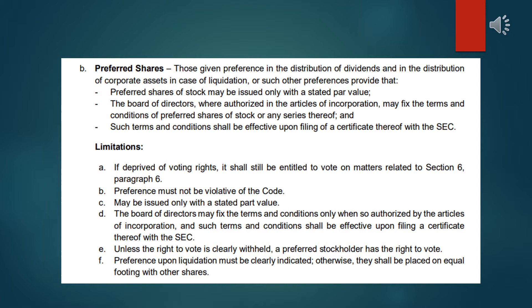Preferred shares are those given preference in the distribution of dividends and in the distribution of corporate assets in case of liquidation, or such other preference. Preferred shares of stock may be issued only at a stated or par value. The board of directors, when authorized in the articles of incorporation, may fix the terms and conditions of the preferred shares, and such terms and conditions shall be effective upon filing of the certificate thereof with the Securities and Exchange Commission. This is what distinguishes them from common shares, which have no special privileges.